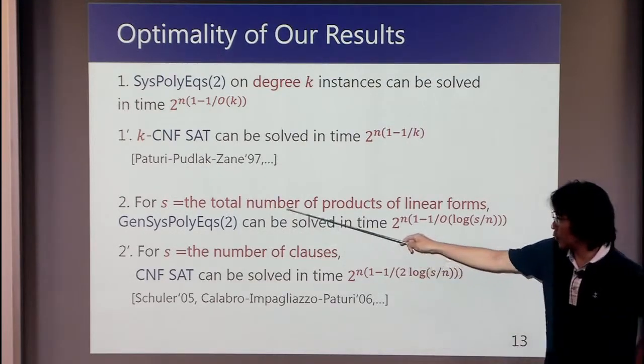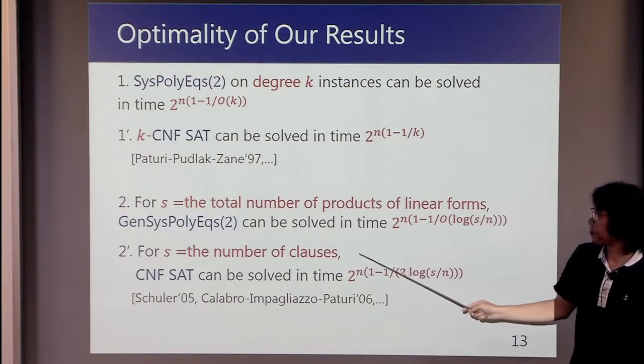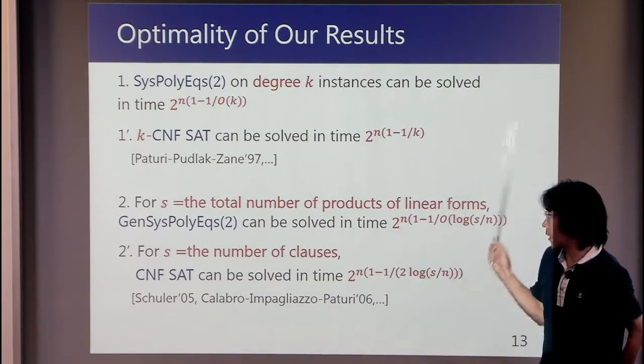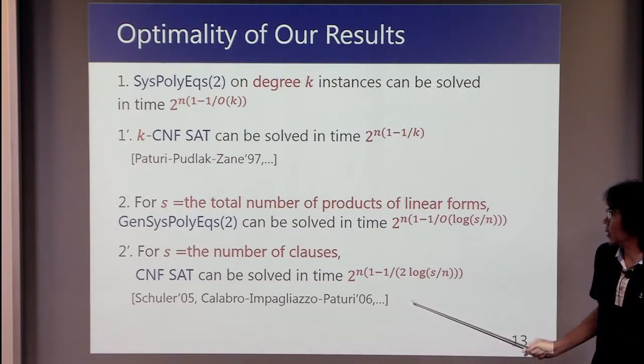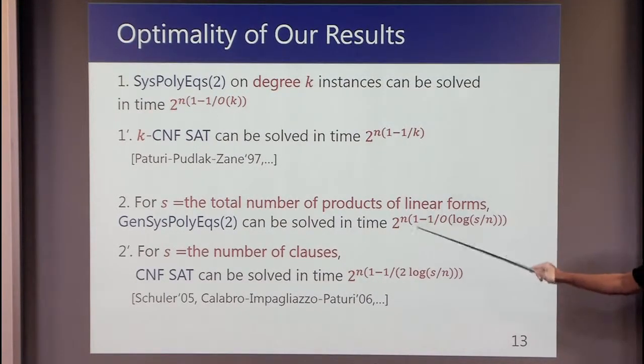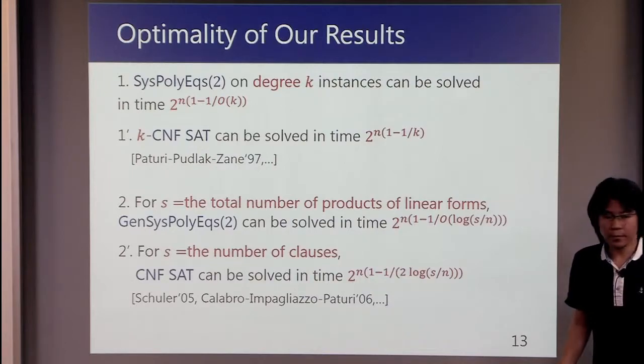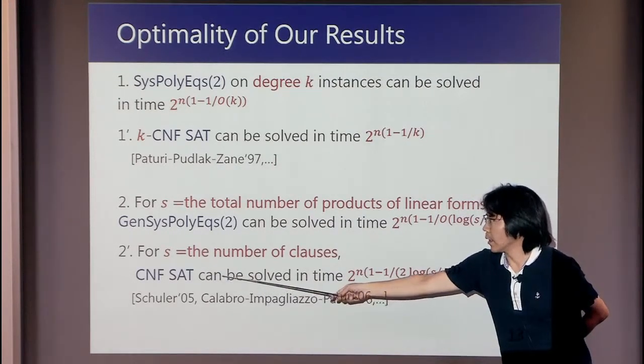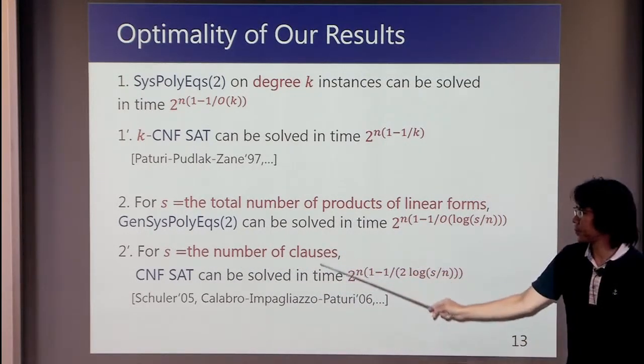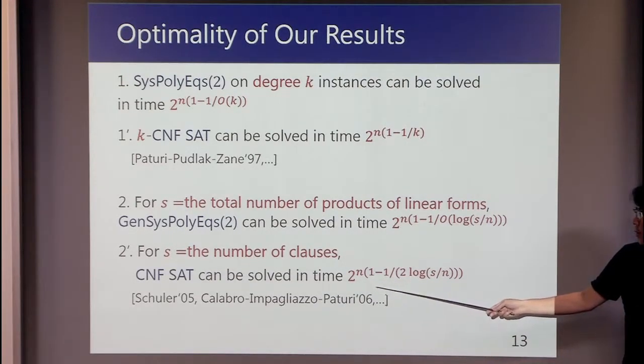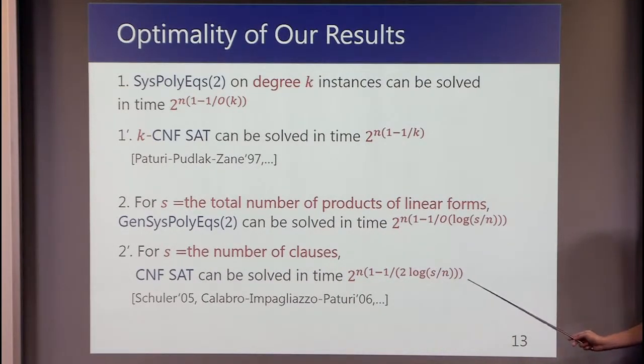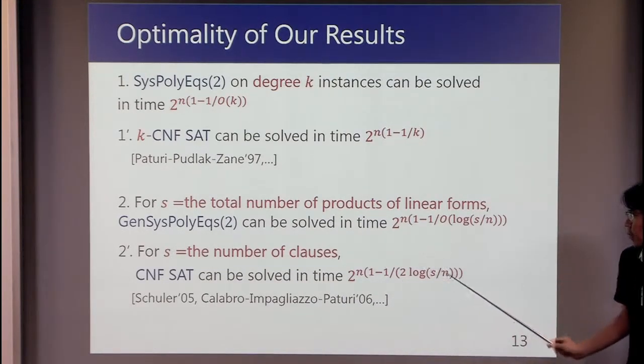As for this result, here we consider Σ-Π-Σ circuits. S is the total number of products of linear forms, and we get the running time of the form like this. As for CNF-SAT, if we set S as the number of clauses, then it is known that CNF-SAT can be solved in time 2^(n(1-1/2log(S/n))). So again, if we would like to improve this part, we also have to improve this part for CNF-SAT.